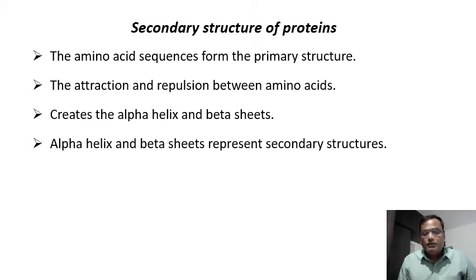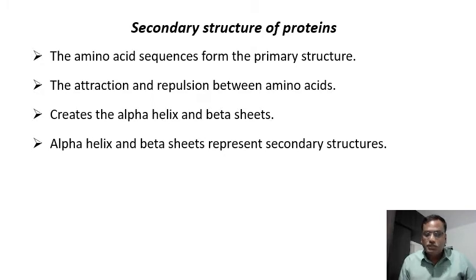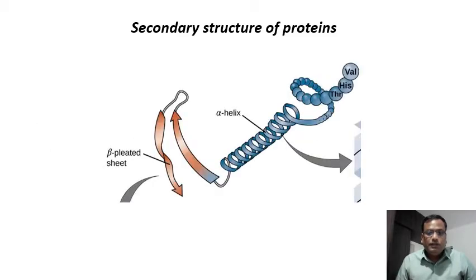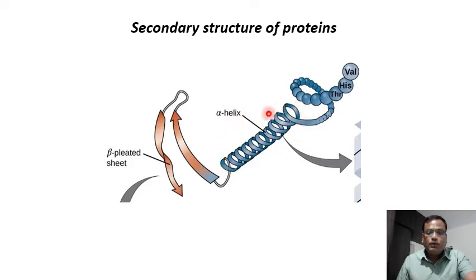There are two important structures which form the secondary structure of the protein: the alpha helix and beta sheets. In the diagram you can see the alpha helix — formed due to the interactions between the amino acids — which has resulted in a helical structure.